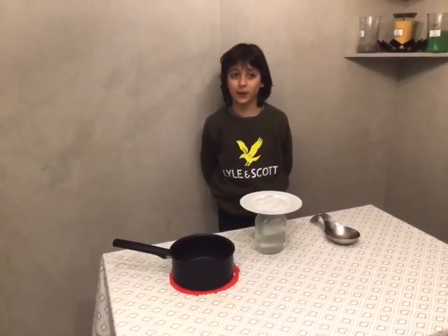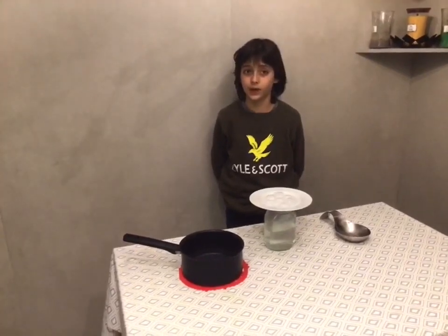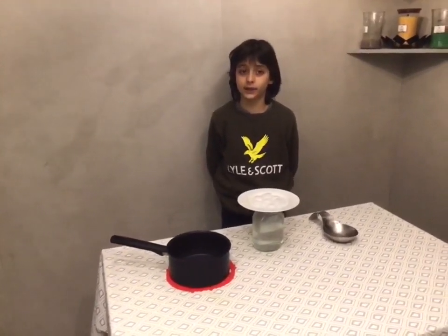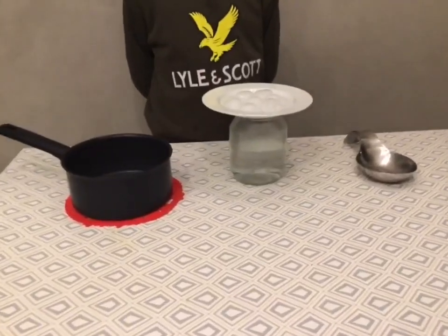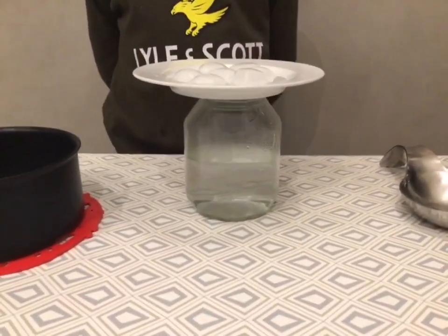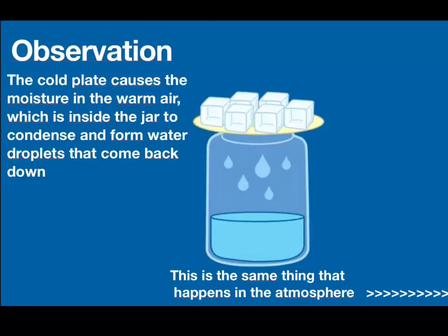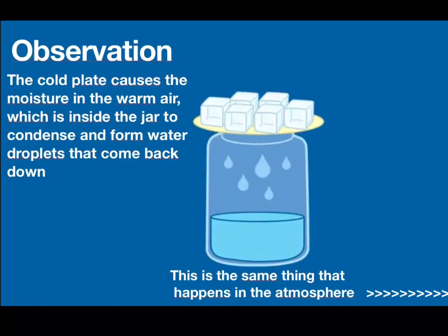We can explain that water went up into the warm air and when it hit the cooled plate it formed into water drops that come back down. The cold plate causes the moisture in the warm air which is inside the jar to condense and form water droplets that come back down. This is the same thing that happens in the atmosphere.